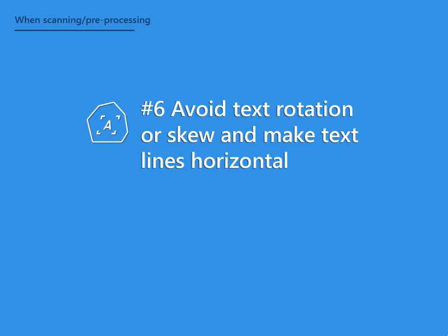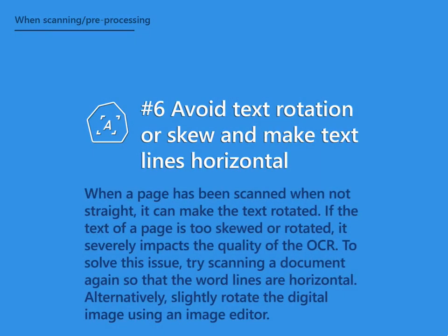Tip 6: Avoid Text Rotation or Skew and Make Text Lines Horizontal. When a page has been scanned not straight, it can make the text rotated. If the text of a page is too skewed or rotated, it severely impacts the quality of the OCR. To solve this issue, try scanning the document again so that the word lines are horizontal. Alternatively, slightly rotate the digital image using an image editor.